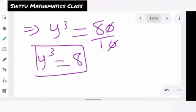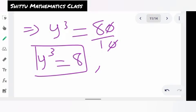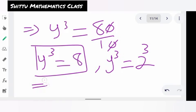This can be written in the form by writing this 8 in terms of base 2, that is in an index form with base 2. We have y to power 3 equals to 2 to power 3. Since the powers are equal, we can have y equals to 2.